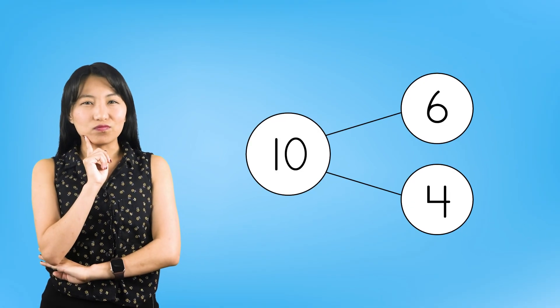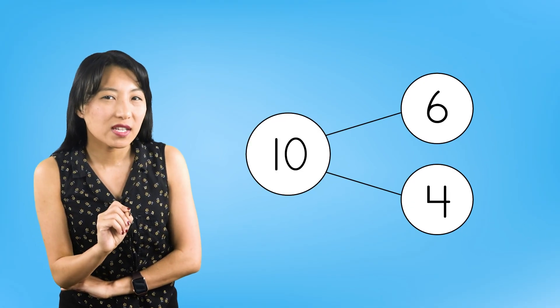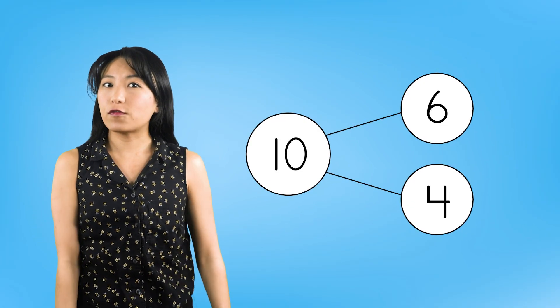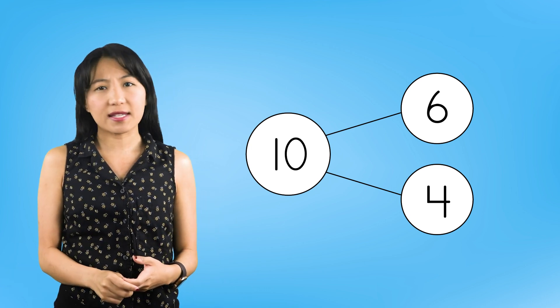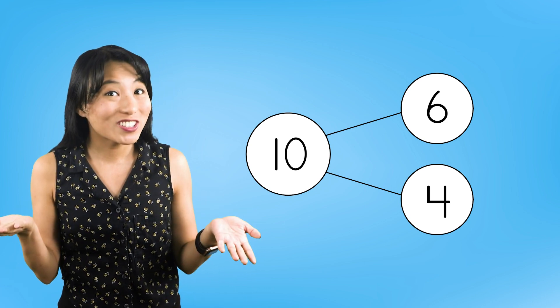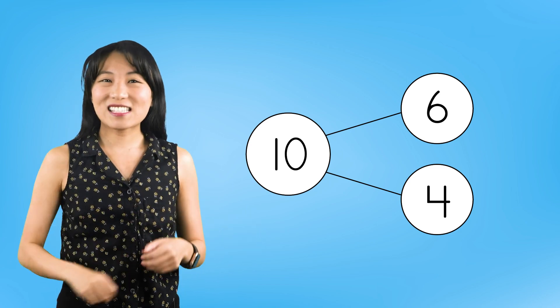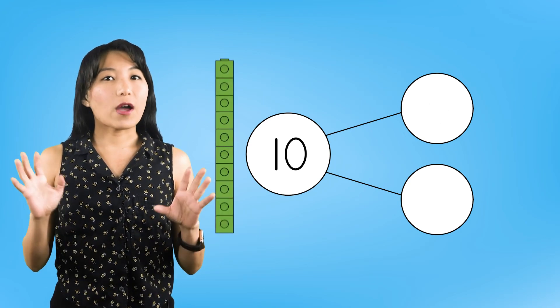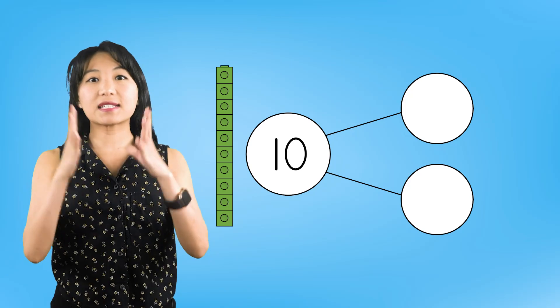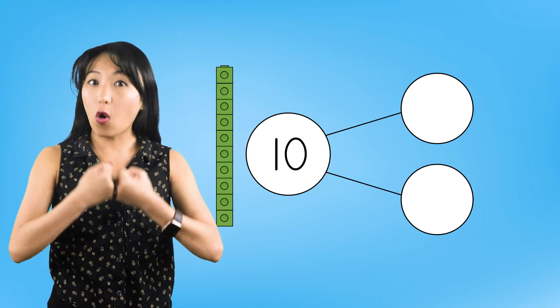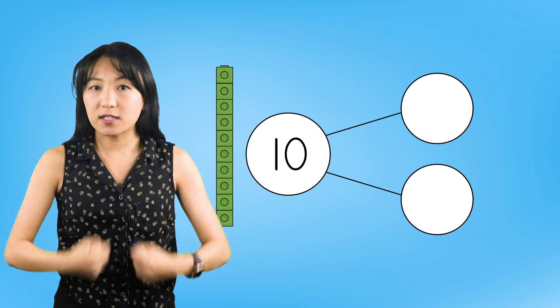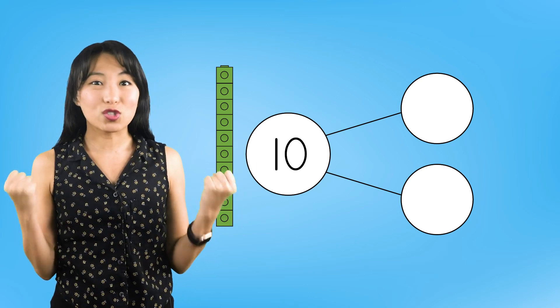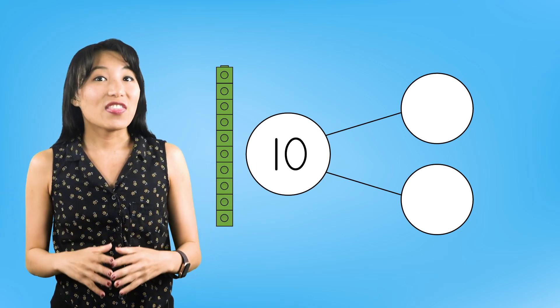Hmm, now I'm wondering. Are 6 and 4 the only numbers that will work together to make 10? What do you think? Let's find out. If I put my tower back together, I have my whole of 10 cubes. Next, I need to break it into two parts. This time, I am only going to take one cube off the top.